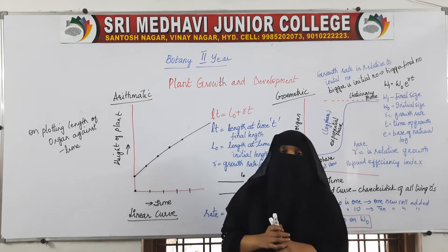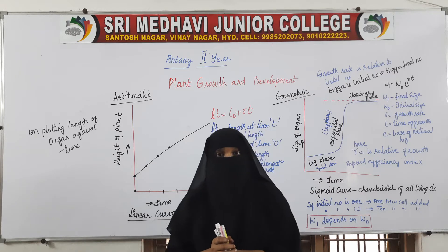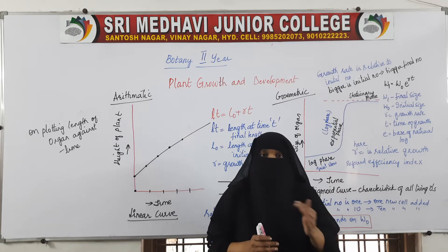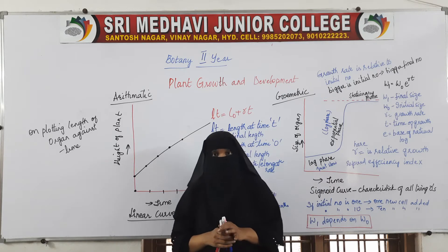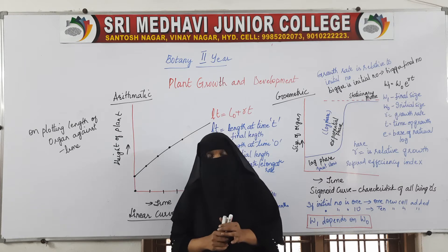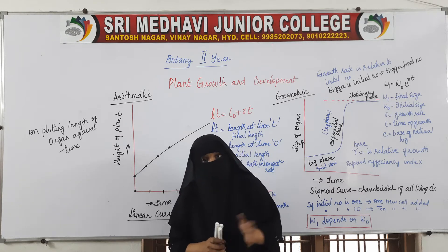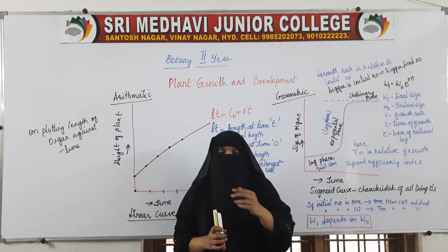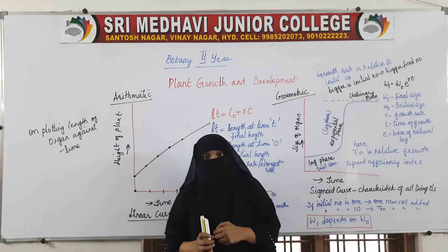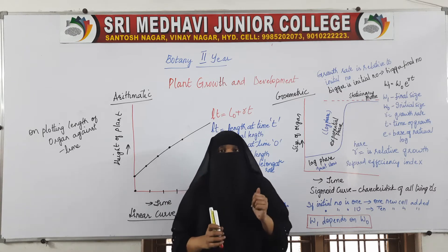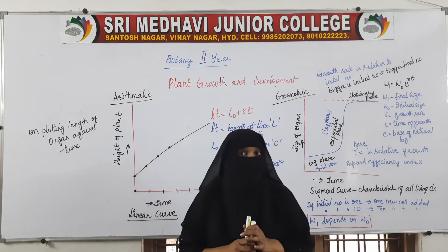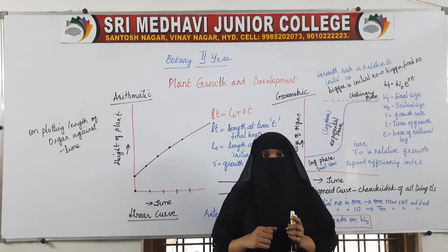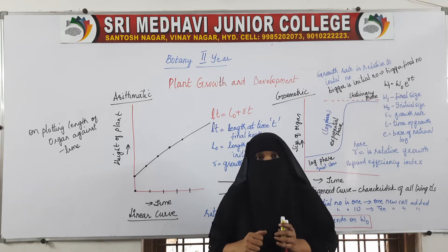Whereas in geometric growth rate, every time when a cell divides, both the progeny cells are meristematic. When these two again divide, they produce two more meristematic cells. So here the growth rate is exponential — very fast and rapid — whereas in arithmetic growth, it is constant and at regular intervals.